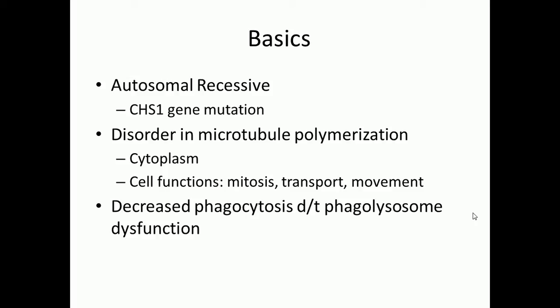Microtubule polymerization is when you take microtubules and put a whole bunch of them together to form a structure for the cell. You'll see these microtubule structures in the cytoplasm, and they're used for mitosis, transport of material within the cell, and cellular movement specifically through the cilia and flagella.